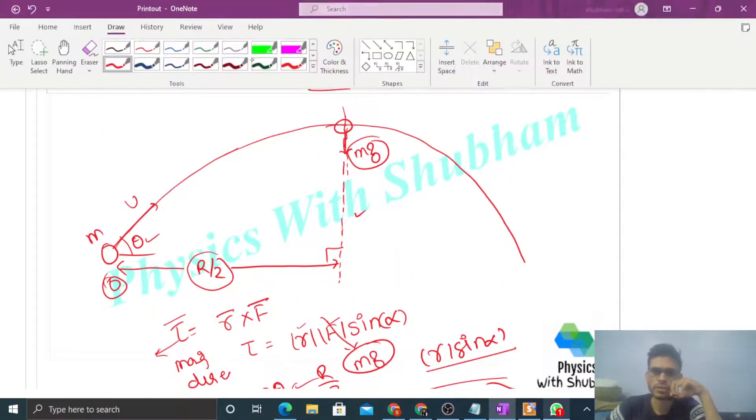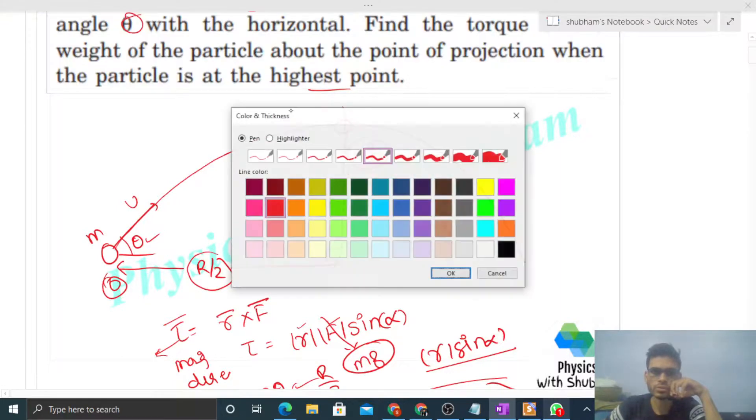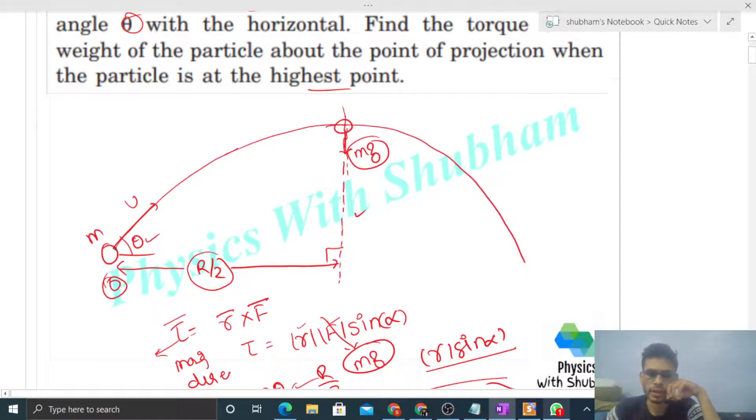Let me use a different color so you can see it clearly. Define the position vector r from point O to the highest point. This is your r vector.